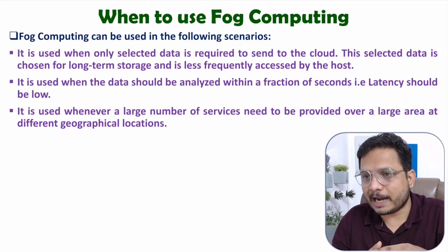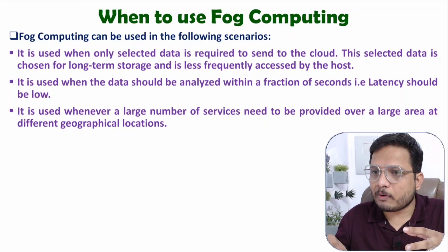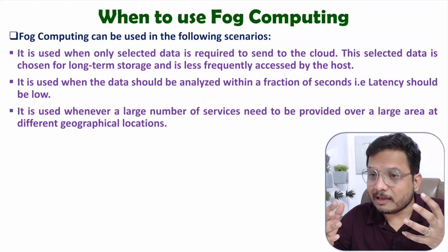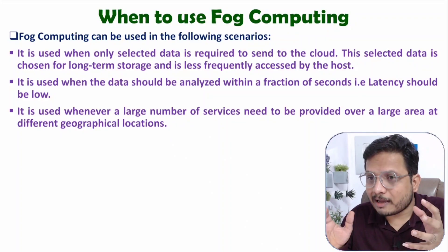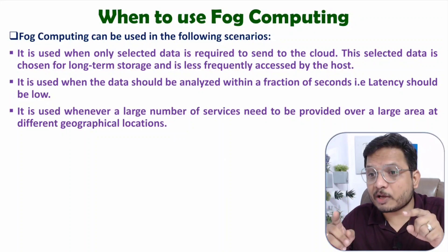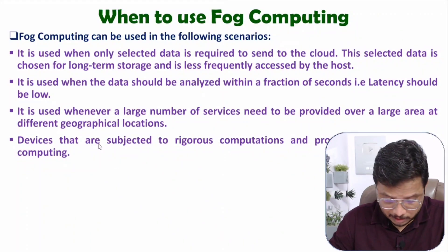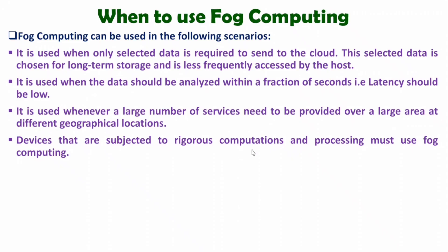For real-time applications and for larger geographical areas, fog computing is preferable. If you have a single cloud for a larger area, latency will be more, but if you have a single cloud along with small fog clouds distributed across the area, real-time applications will be better served. Devices subjected to rigorous computation and processing must use fog computing, especially when lower latency and fast data processing are required.